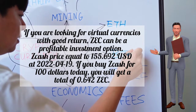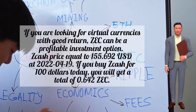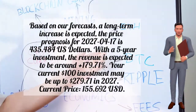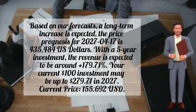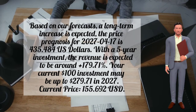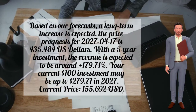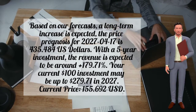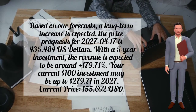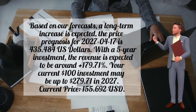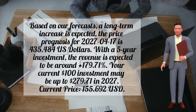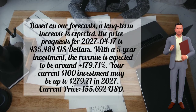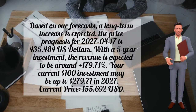If you buy ZCash for $100 today, you will get a total of 0.642 ZEC. Based on our forecasts, a long-term increase is expected. The price prognosis for April 17th, 2027 is $435.484 US dollars. With a five-year investment, the revenue is expected to be around +179.71%, meaning your current $100 investment may be up to $279.71 in 2027.